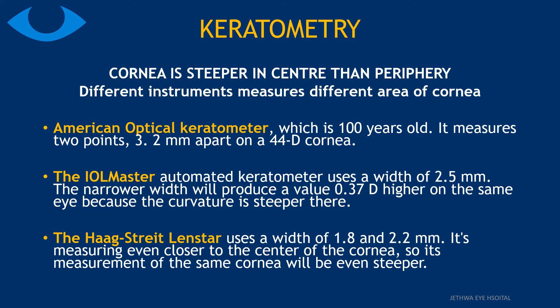We know that the cornea is not a sphere — it is steeper in the center than the periphery. Different instruments measure different areas of the cornea, giving different results. The American optical keratometer, which is 100 years old, measures 2 points 3.2 mm apart on a 44-diopter cornea. The IOLMaster, an automated keratometer, uses a width of 2.5 mm. The narrower width produces a value 0.37 diopter higher on the same eye. The Haag-Streit Lenstar uses a still smaller area of 1.8 to 2.2 mm, measuring closer to the center of the cornea, so its measurement of the same cornea will be even steeper.